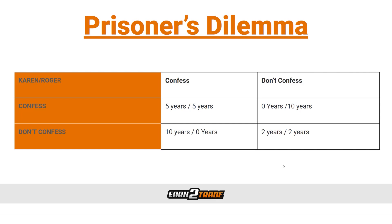Karen and Roger are split up. They don't know what the other person will do, so they have to make their decisions independently. Karen and Roger have had a wild time stealing jewelry together, but they don't have any special loyalty to each other. There's no particular reason to think that either of them won't stab the other in the back to better benefit themselves. Yet they both have to make a decision that favors them the most, regardless of what the other person decides.